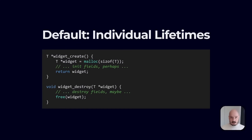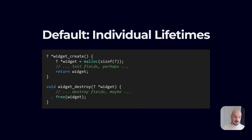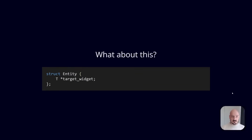Let's look at the default first. We've got a create function and a destroy function. When we create a widget we allocate space for it on the heap using malloc or new — if you're using C++, C#, JavaScript, or something. And we have a destroy function which just calls free. We free the memory. Pretty straightforward, but it has some problems and that's what we're going to go into.